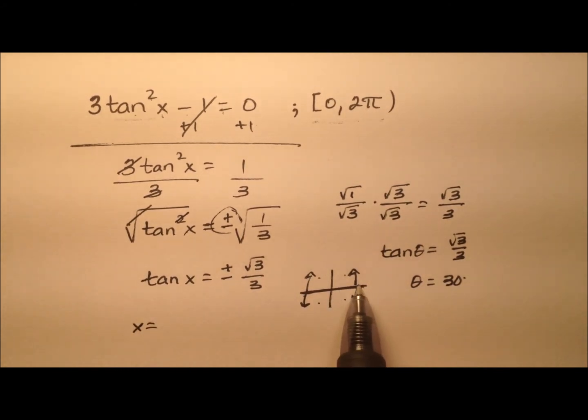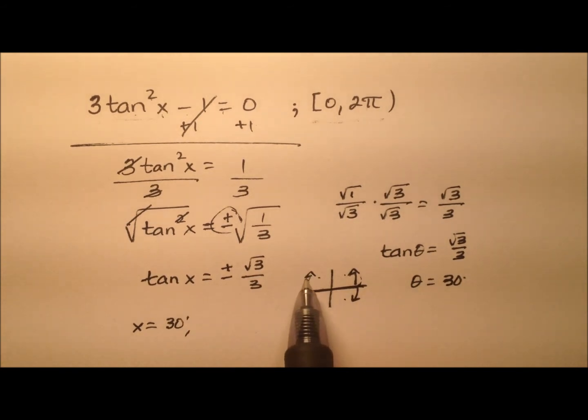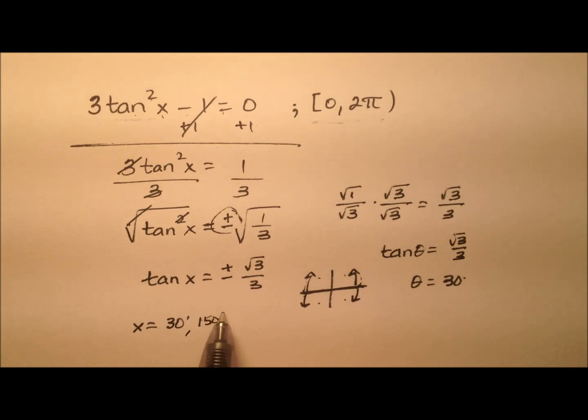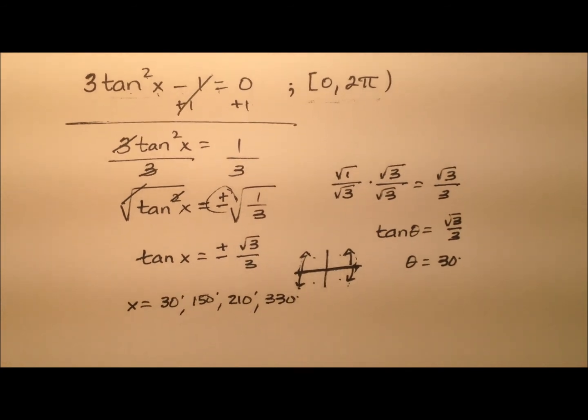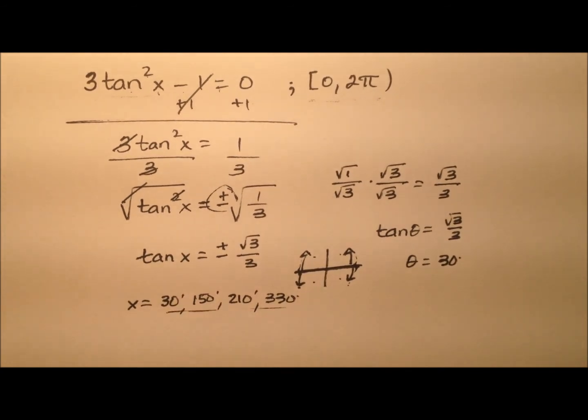Well, it's 0 plus 30. Well, that's 30 degrees. And it's 180 minus 30. So that's 150 degrees. 180 plus 30. So that's 210. And 0 minus 30, or you can say 360 minus 30, and that'll be 330 degrees. Of course, all of these values are in degrees, but we need our answers to be in radians.